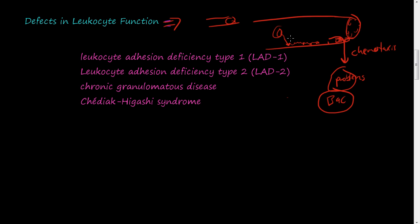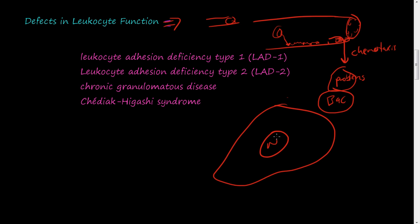The cell will create pseudopods and ingest the bacteria. Then lysosomes will fuse to the bacteria's membrane and destroy it. So this whole process — the leukocyte getting out of the bloodstream, getting into the tissues, and eating up and resolving the problem — is how the immune response works.